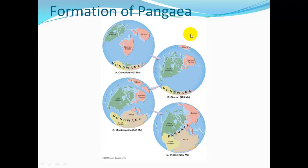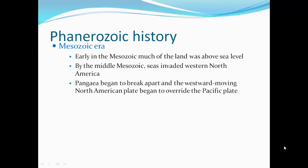Here we have the formation of Pangaea — the continents approached each other and collided, forming the Caledonian Mountains. During the Mesozoic era, in the early Mesozoic much of the land was above sea level. By the middle of the Mesozoic, seas invaded western North America. Pangaea began to break apart and the westward-moving North American plate began to override the Pacific plate, resulting in crustal deformation along the entire western margin of North America. This formed the Sierra Nevada and the Rocky Mountains.